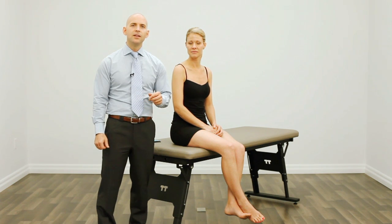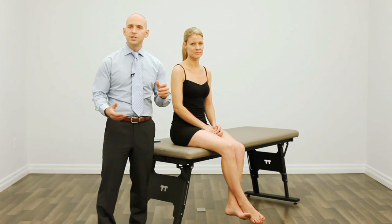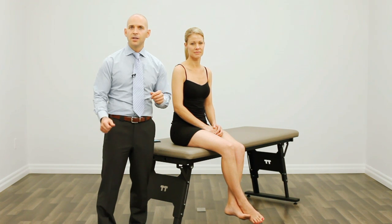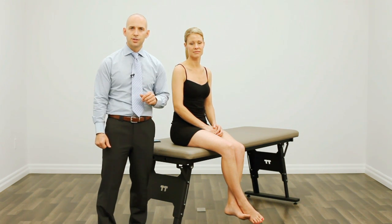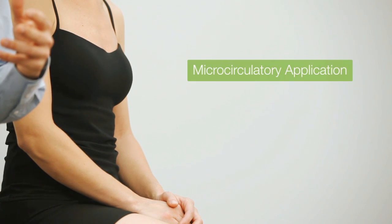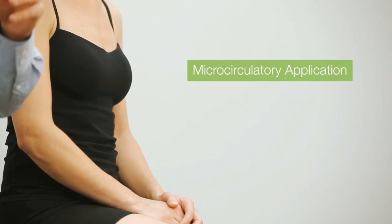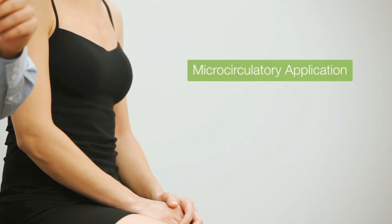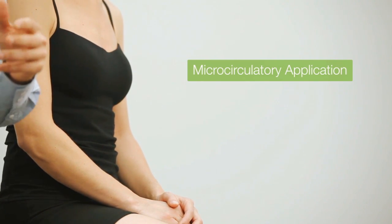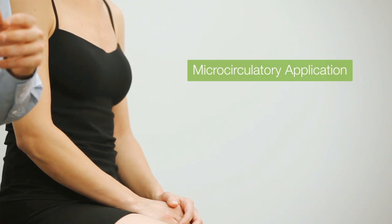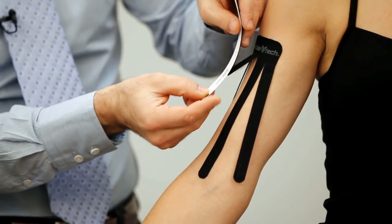We've identified three main categories of action for which kinesiology taping can have an enhancing effect on treating your patients. The first category would be micro circulatory. A micro circulatory effect is where you're using the tape to try to improve swelling, edema, or bruising.